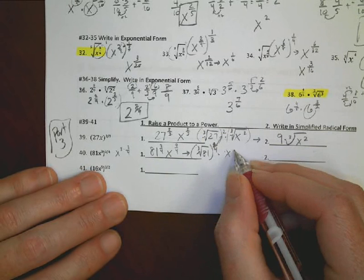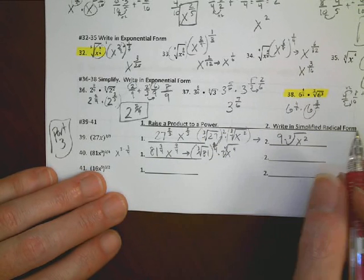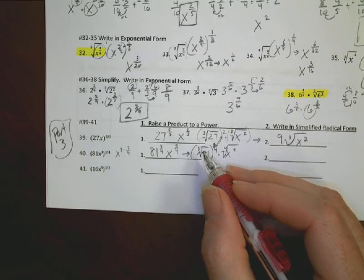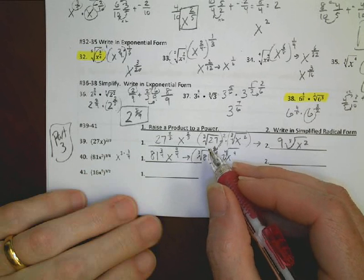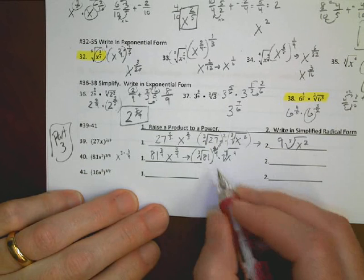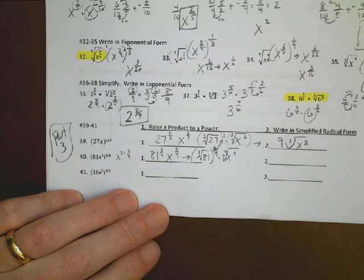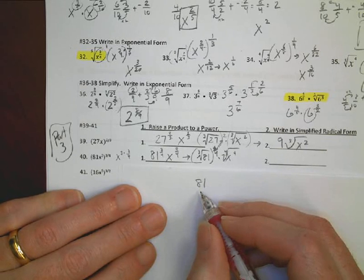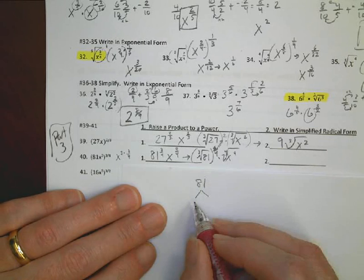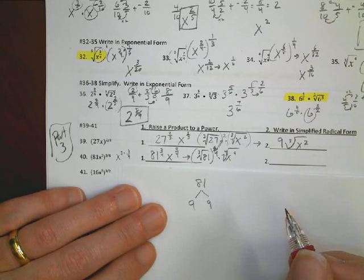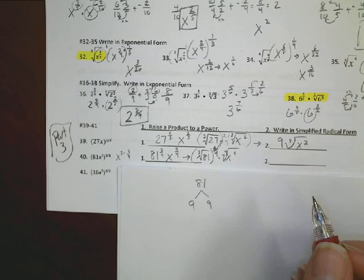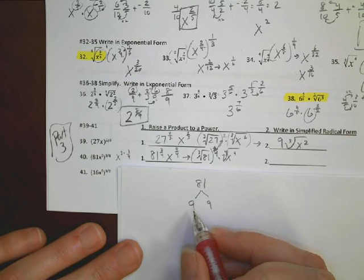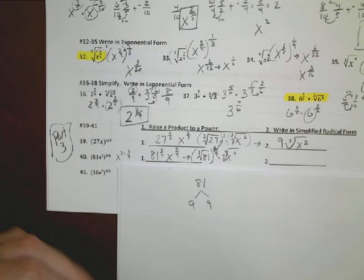This becomes 81 cubed root to the 4th power. I'll put that 3 there for now, to the 4th power, times x to the 9th power and the root of 4. This is where it gets a little bit funky. What number is this cubed going to be? That's going to be a little bit different. Let's see.